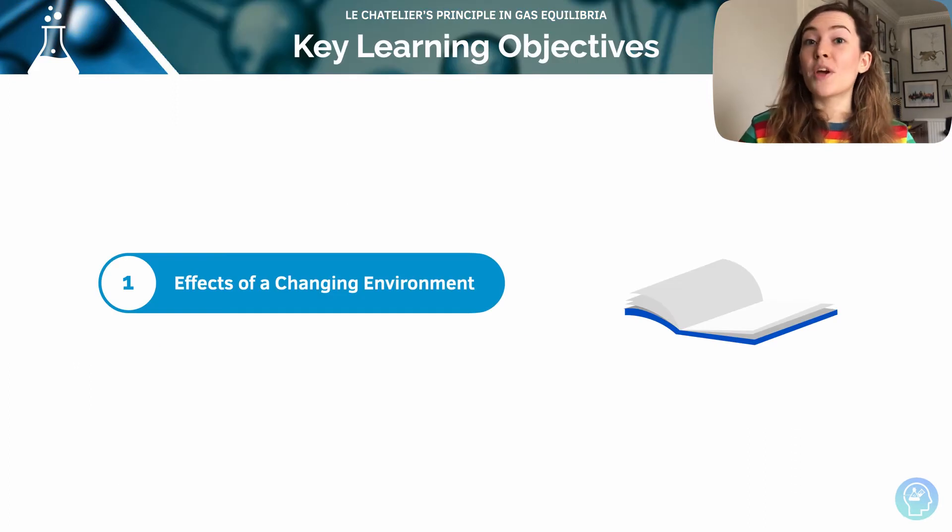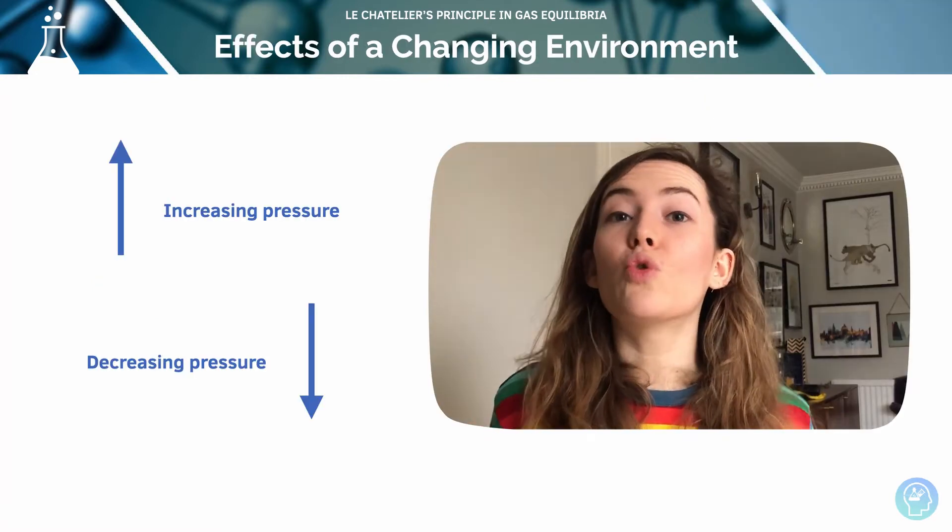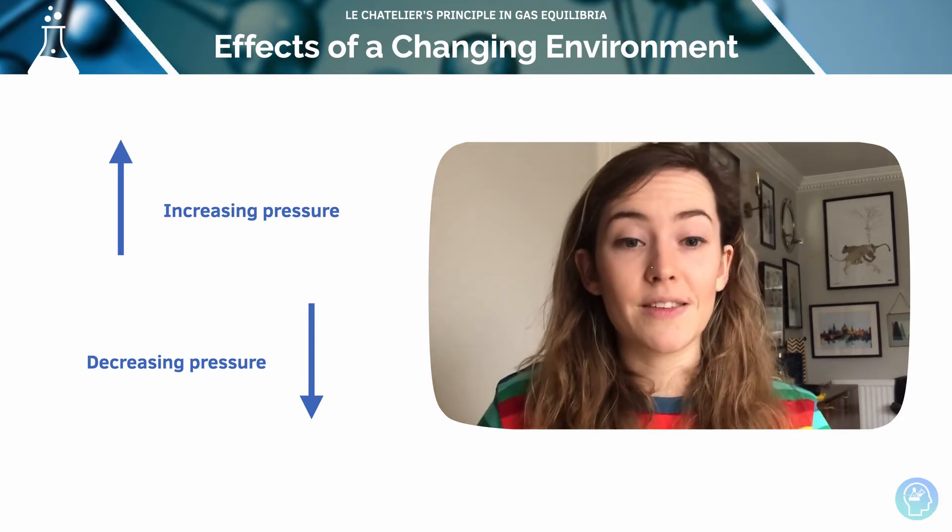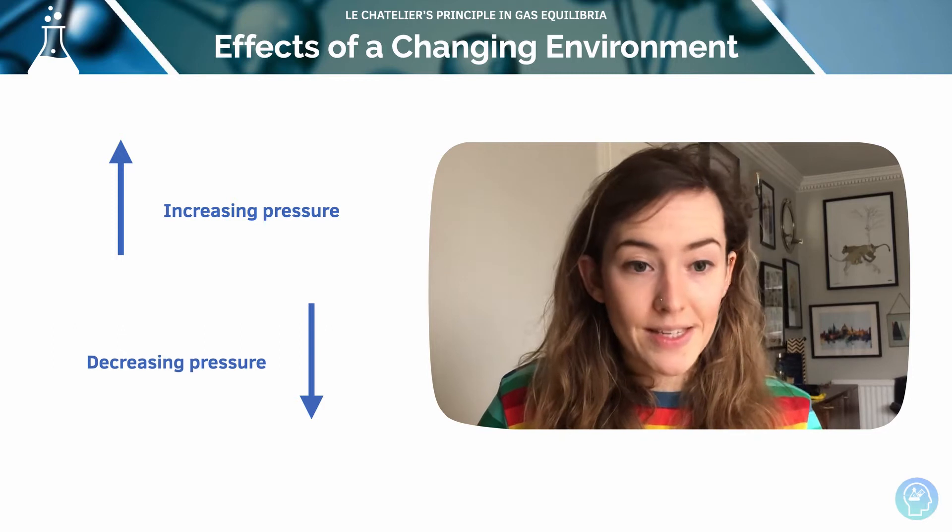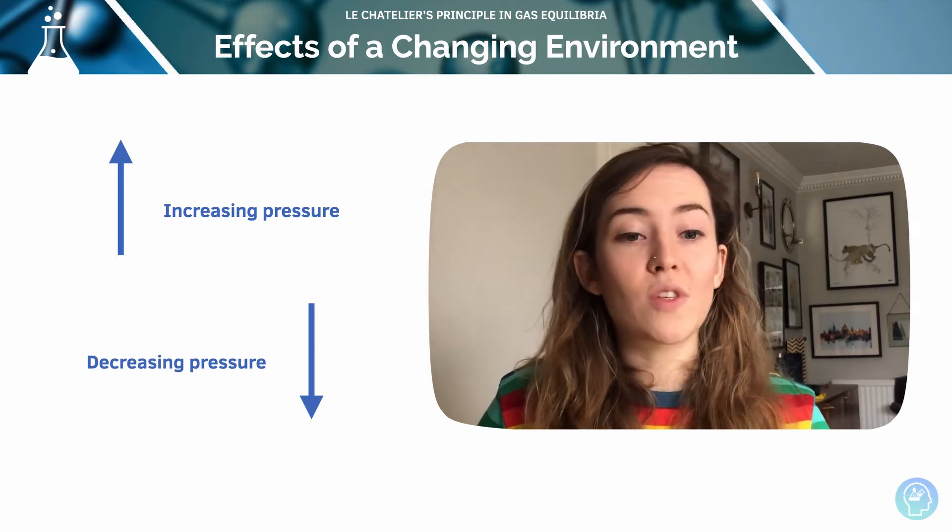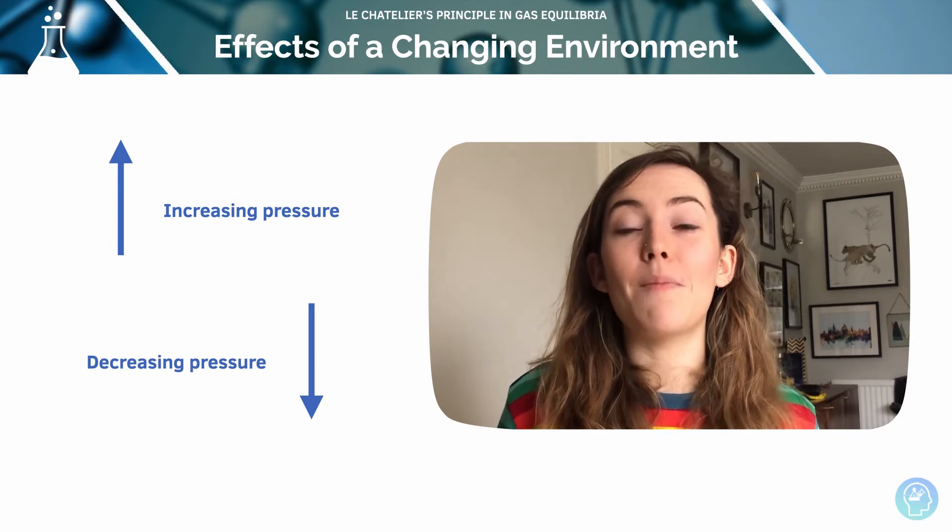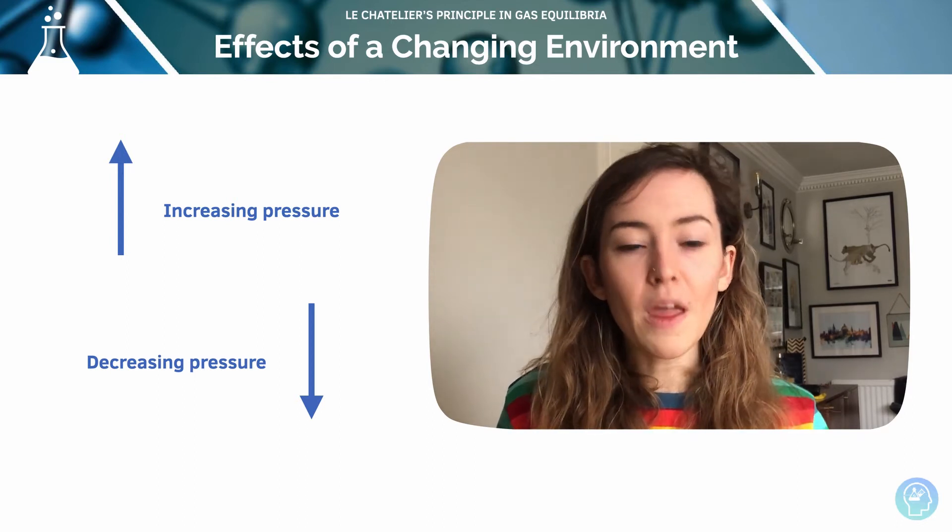In this lesson we're going to look at how Le Chatelier's plays in with this. We're going to look at the effect of changing the environment of these closed systems. So you'll recall from your previous year in chemistry that Le Chatelier's Principle states that any change to a system in equilibrium will cause the system to favor the reaction that opposes the change. The system wants to minimize the change.